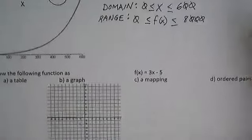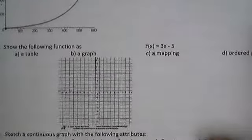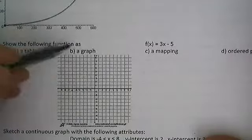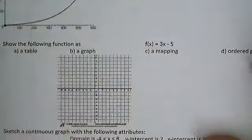Algebra 1, Review Problem 7a. Show the following function as a table, a graph, a mapping, and a set of ordered pairs.